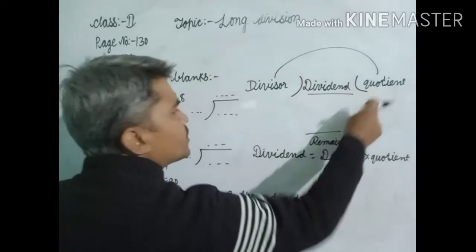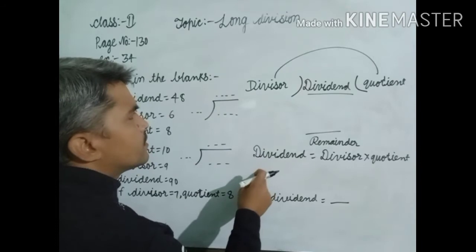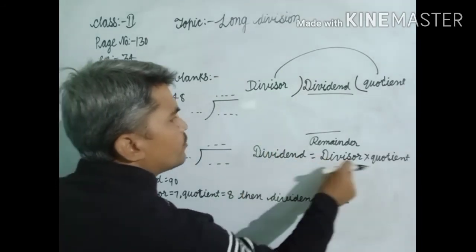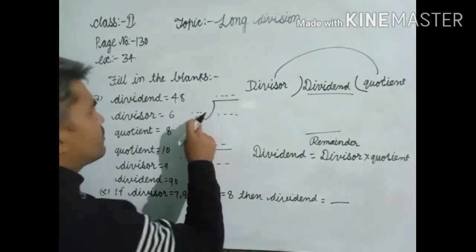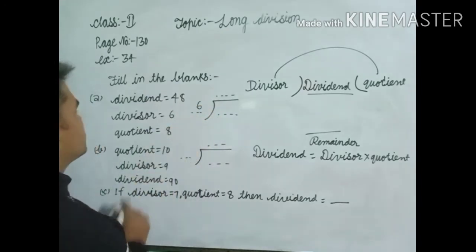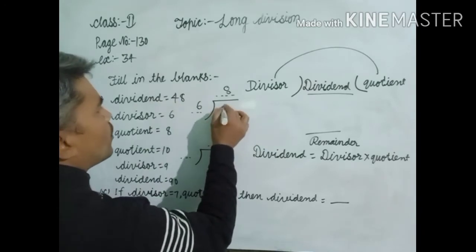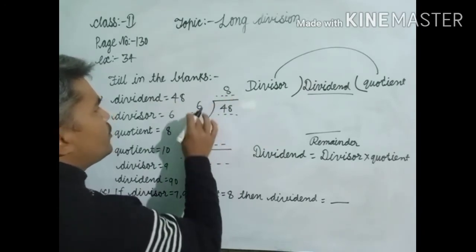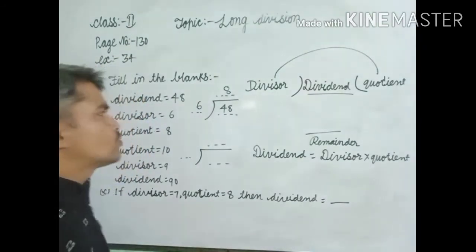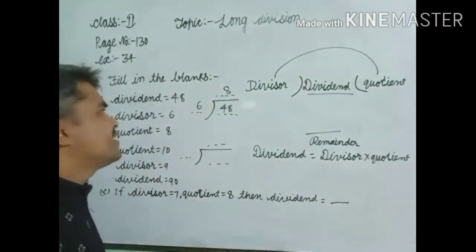And one formula is taken from this: dividend is equal to divisor multiplied by quotient. Dear students, here you must write the division. Divisor is equal to 6, so you write here 6. Quotient is equal to 8, here quotient is equal to 8. And dividend is equal to 48. Dear students, when you read the division table, 6 eights are 48. So here 8 is the quotient, 48 is the dividend, and 6 is the divisor.